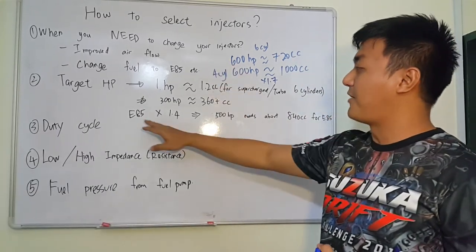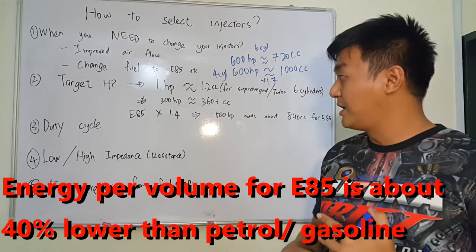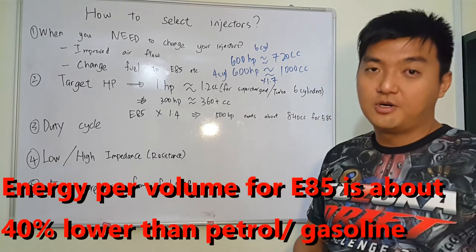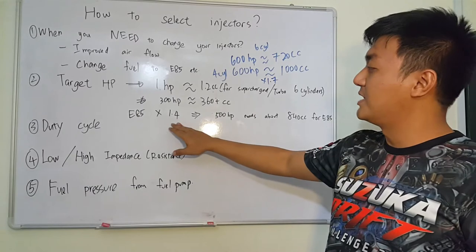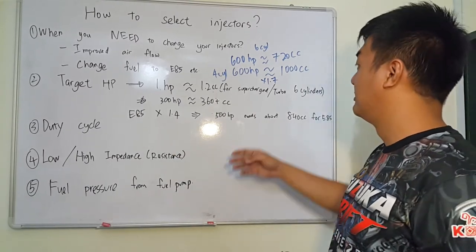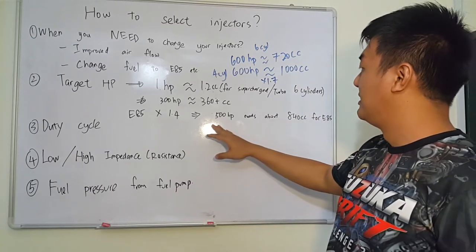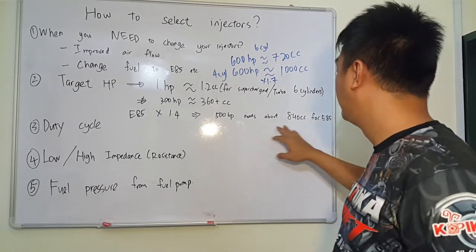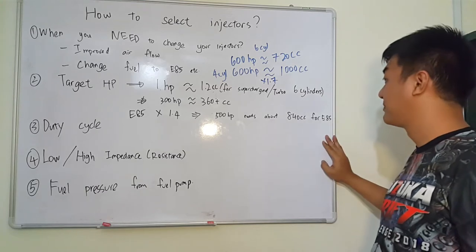If you change fuel to E85, we know that from E85 we can only get about 40% less power compared to petrol. So what we need is to compensate by increasing 40% more E85 to gain the same amount of power as petrol. So for 500hp, you may need about 840cc injectors for E85.